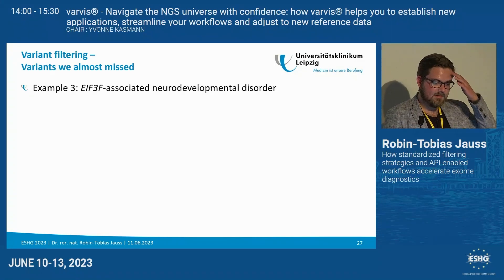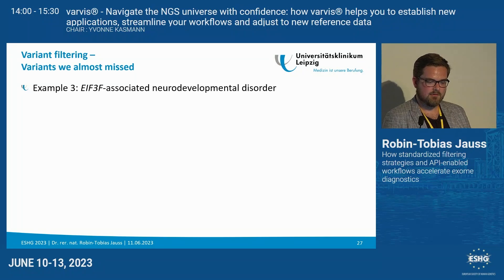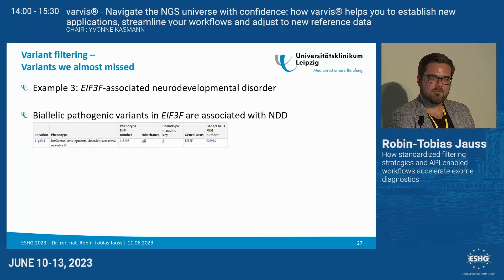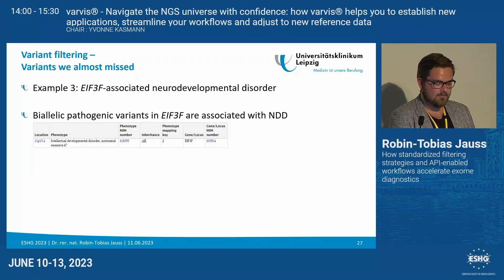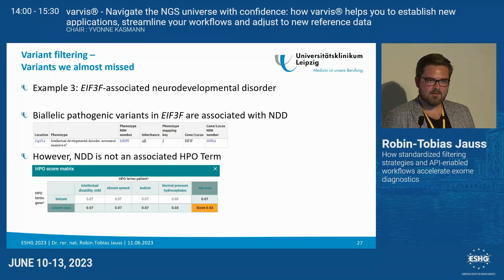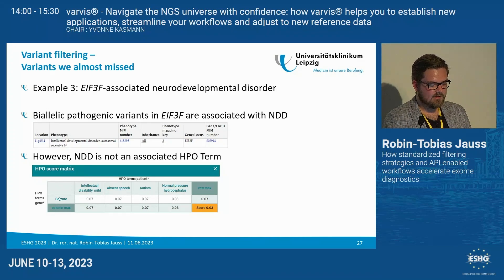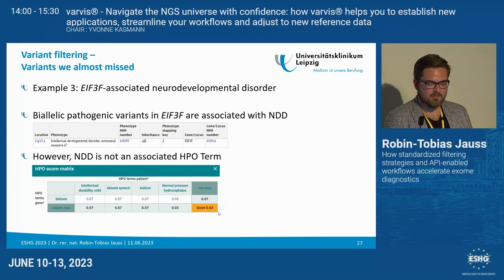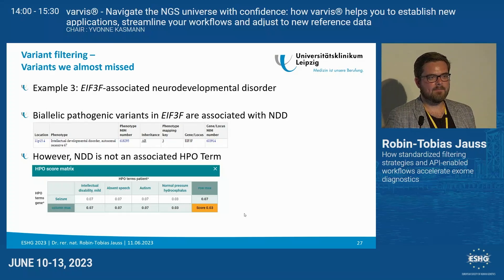Another example is the EIF3F-associated neurodevelopmental disorder. This gene is known to be associated with the recessive form of neurodevelopmental delay, but the problem is that NDD is not an associated HPO term with this gene. The only HPO term associated with EIF3F is seizures. If your patient does not have seizures but only intellectual disability, the HPO similarity overlap score is very low, and this gene harbors the risk of being filtered out when exclusively filtering for high phenotypic overlap.